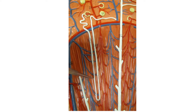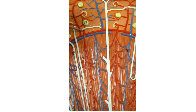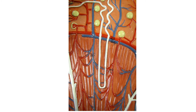From there it's going to go around the loop of Henle, and it's going to come back up here and go through this structure here, which is the distal tubule, or the distal convoluted tubule.